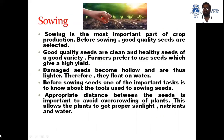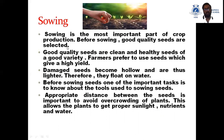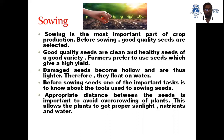The second agricultural practice is sowing. Sowing is the most important part of crop production. Before sowing, good quality seeds are selected. Good quality seeds are clean and healthy seeds of a good variety. Farmers prefer to use seeds which give a high yield. High yield means high production, which means high economic growth.